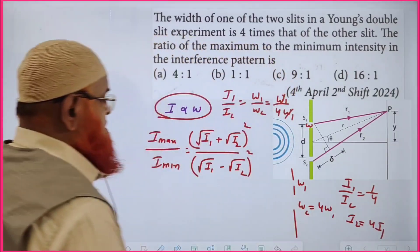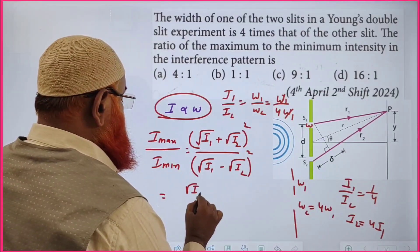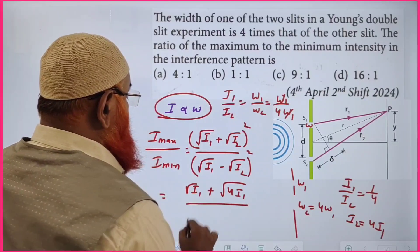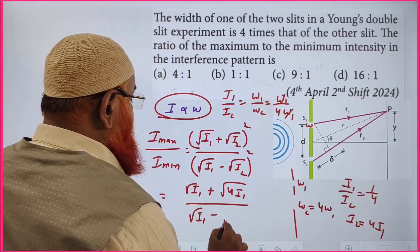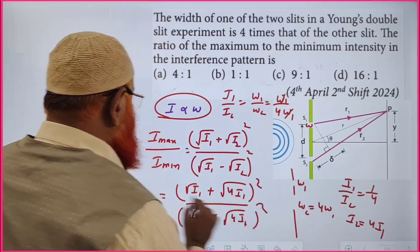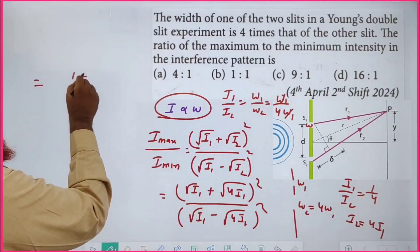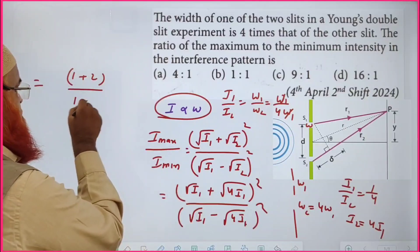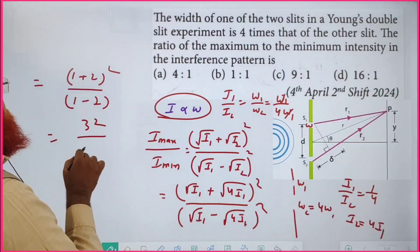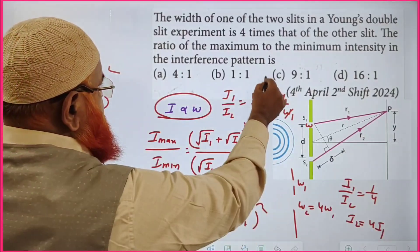Substituting I₂ = 4·I₁: I_max = (√I₁ + √(4I₁))² = (√I₁ + 2√I₁)² = 9·I₁ and I_min = (√I₁ - 2√I₁)² = I₁. So I_max/I_min = 9:1, therefore the answer is option C.